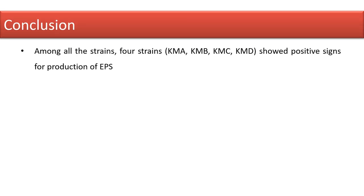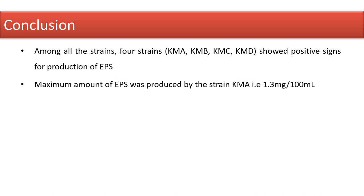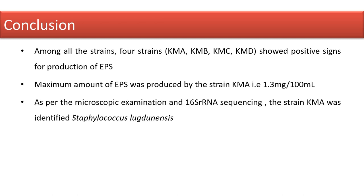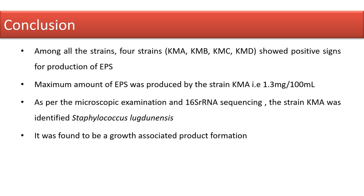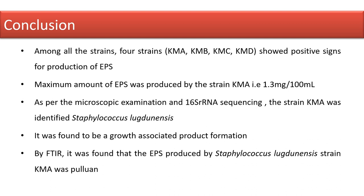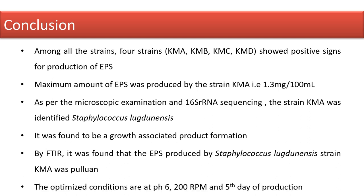To conclude, 4 of all strains have the potential to produce EPS. The maximum amount of EPS was produced by strain KMA. As per the microscopic examination and sequencing, KMA was identified to be Staphylococcus lugdunensis. It was found to be a growth associated product formation. By FTIR, it was found that the EPS produced by strain KMA was Pullulan. The optimized conditions in this experiment are pH 6, 200 RPM, and 5th day of production.